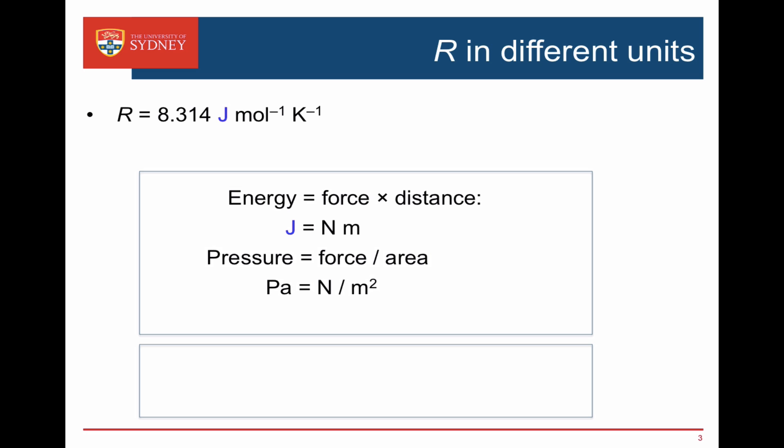Pressure in Pascals is the force divided by area. So Pascals is newtons per meter squared. If we relate those two things we can see that the Pascal times meter cubed is the same as joules. So the gas constant 8.314 joules per mole per Kelvin is exactly the same as 8.314 Pascal meter cubed per mole per Kelvin.